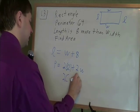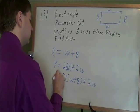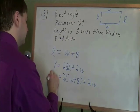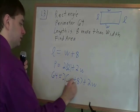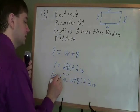And perimeter, they told me, is 64. So now I have an equation with only one thing I don't know. And that's great. It means I can find what W is.